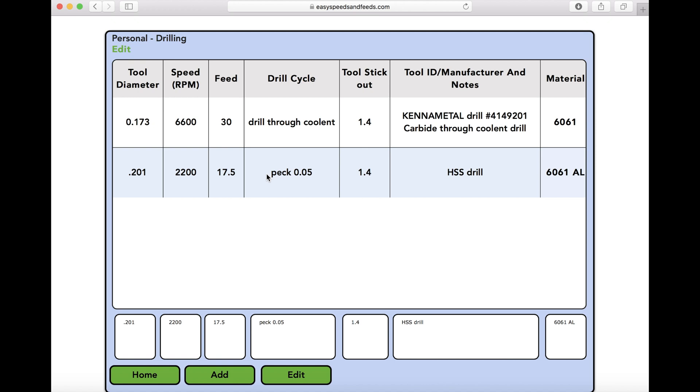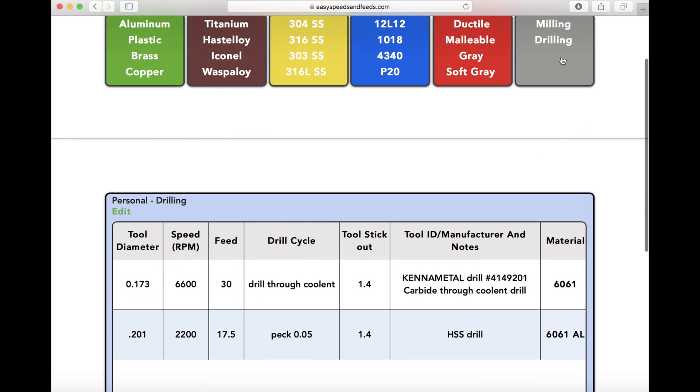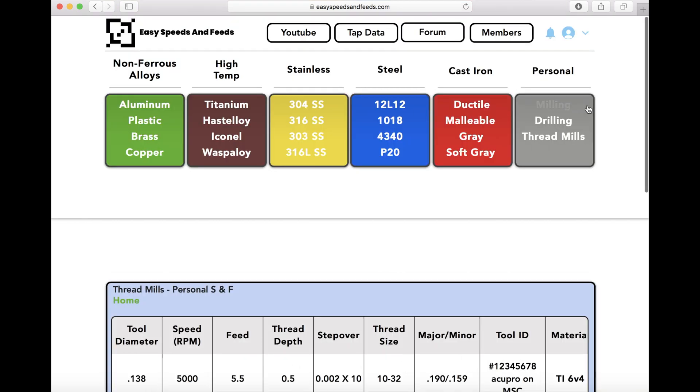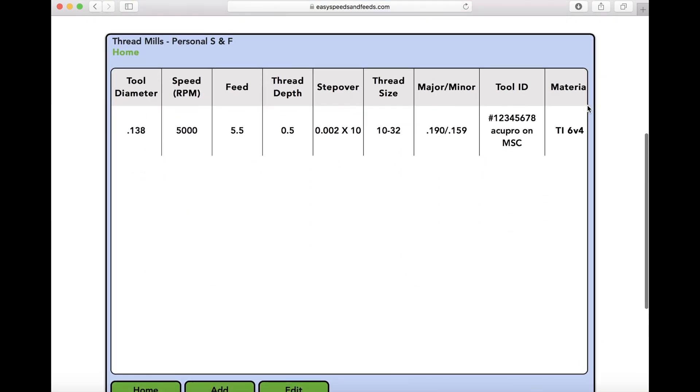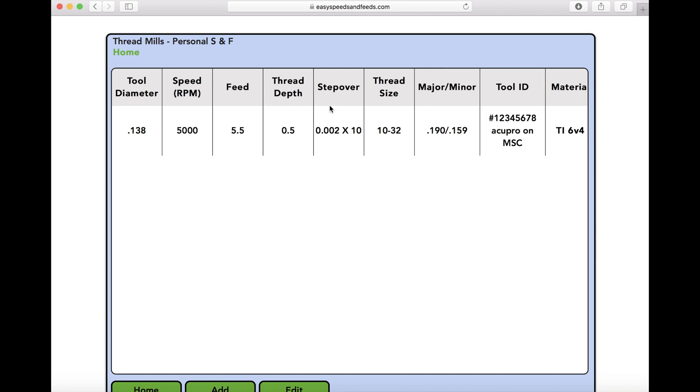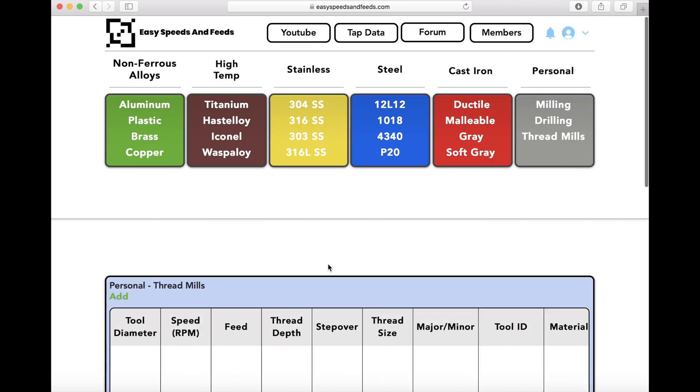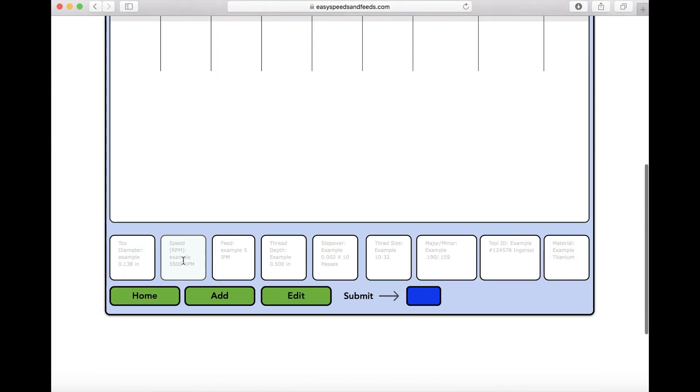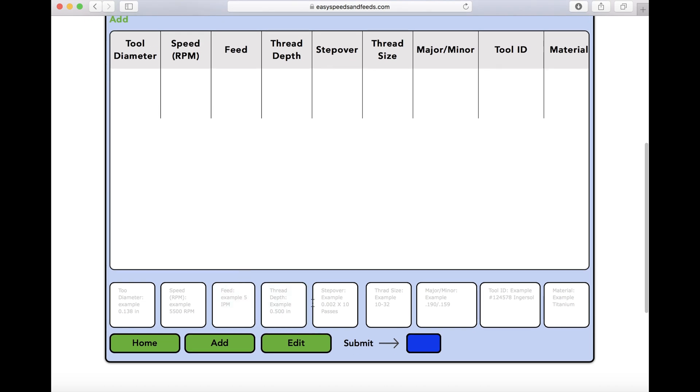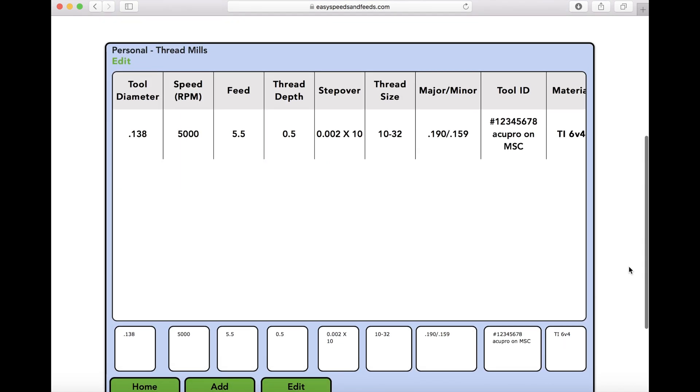Same thing as milling. Thread mills - this is probably the most important to save. You've got tool diameter, feed, thread depth, step over, thread size, major/minor, tool ID, and material. Click on add, do the same as milling, fill in your boxes. Go to edit, you can change everything just like milling and drilling. Building up your databases really will help you out and take out all the experimentation. It'll just make you a much better machinist.